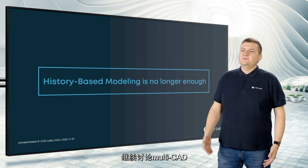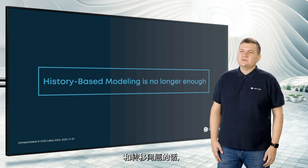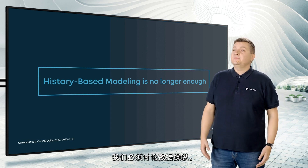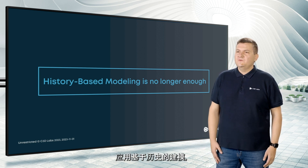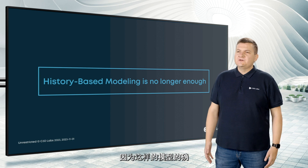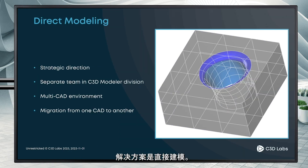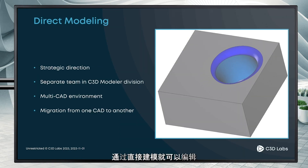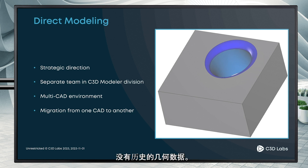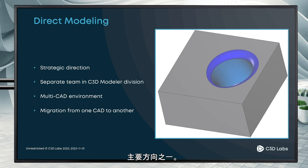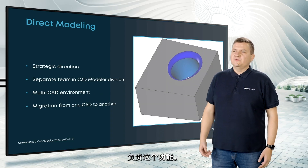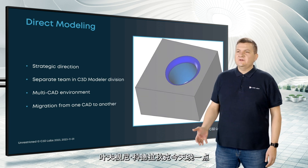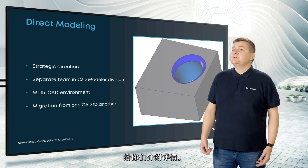If we continue to talk about multi-CAD and migration issues, we must talk about data modification. History-based modeling is not available for imported geometry, because there is no history in these models. The answer is direct modeling, which makes it possible to edit geometry without history. This became one of our main directions last year, and this year we formed a separate team to work on this functionality. Evgeny Kondratiuk will tell you more details later today.